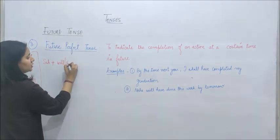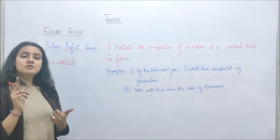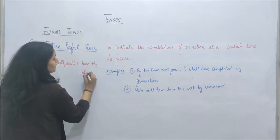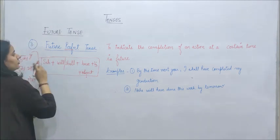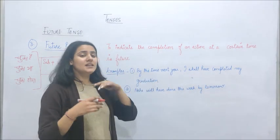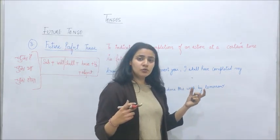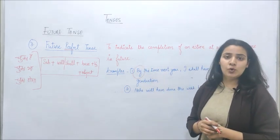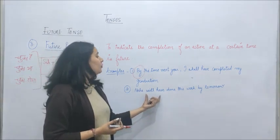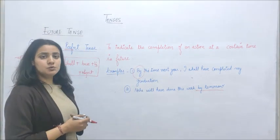For the format or syntax of future perfect tense: Subject + will/shall + have + verb (third form) + object. In perfect tense we always use the third form of the verb. Since after will/shall we can only use the first form, we place 'have' in between and then the third form follows. Examples: 'By this time next year, I shall have completed my work' or 'Next year, I shall have completed my graduation.' 'Neha will have done this work by tomorrow.' In future perfect tense we use a time reference with 'by'.